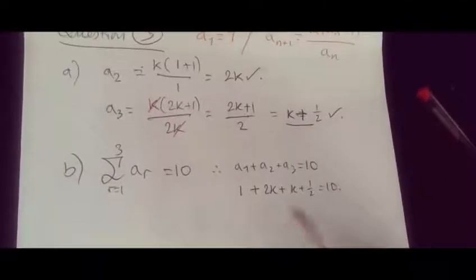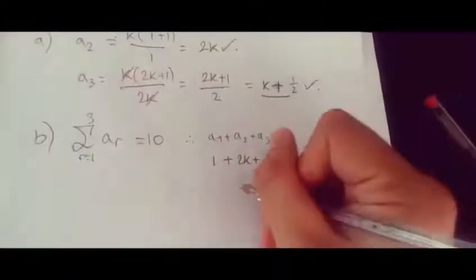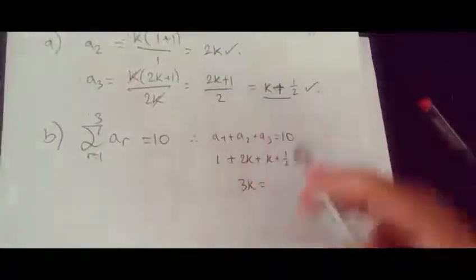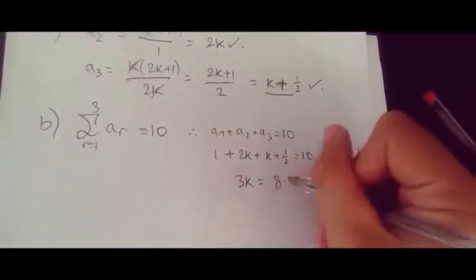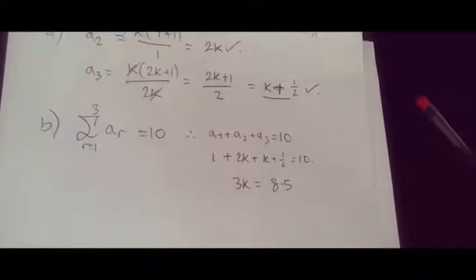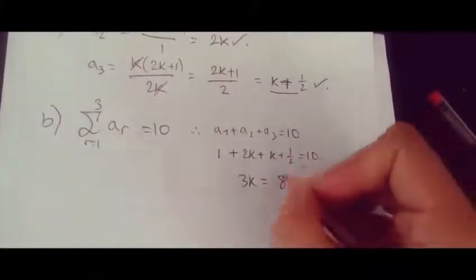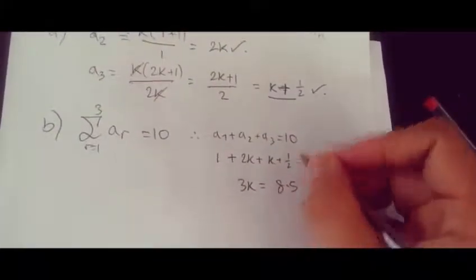That's easy algebra. Adding these k's up we're going to get 3k. Adding these two gives 1.5. 10 take away 1.5 is 8.5 or 8 and a half.